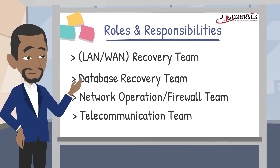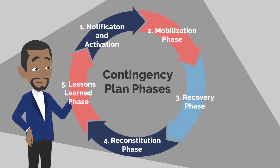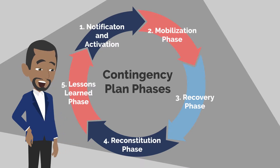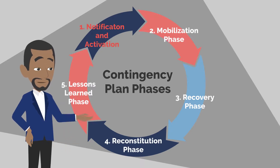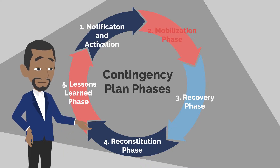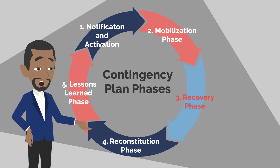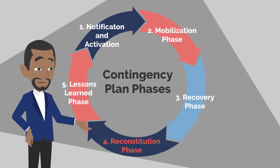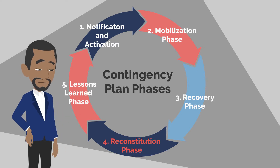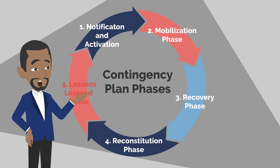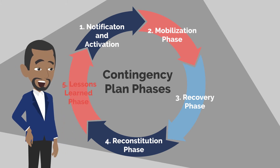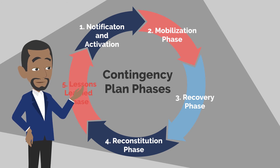In the next video, we will review the five phases of contingency plan development. First, the notification and activation of the contingency plan. Second, the mobilization of staff to alternative solutions and locations. Third, the recovery of business processes using alternative solutions and locations. Fourth, the reconstitution of normal operations using primary solutions and locations. And finally, how to conduct lessons learned activities for the benefit of improving the contingency plan and minimizing the risk of having to activate the plan in the future.